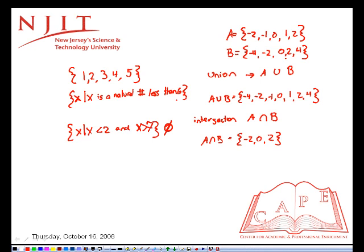So here's another practice problem. Let's say that a is equal to negative three, negative one, zero, one, three. And b is equal to negative four, negative two, zero, two, four.